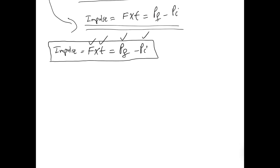The units for impulse are newton-seconds. This is because impulse is represented by force — measured in newtons — multiplied by time in seconds. So the unit is newton multiplied by seconds, written as N·s.